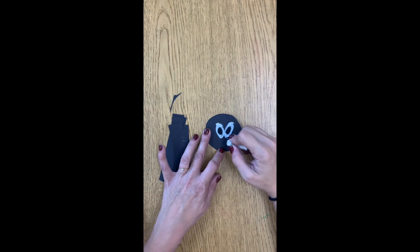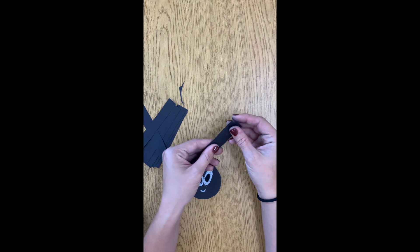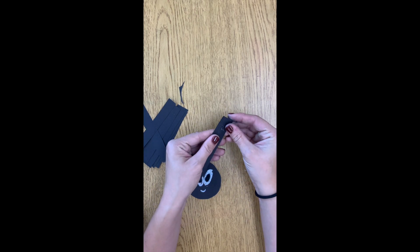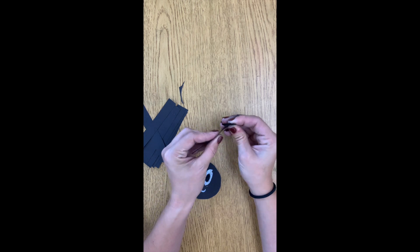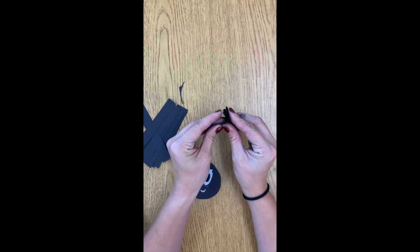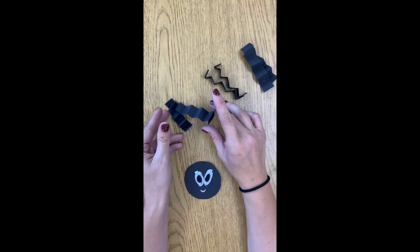You could also use a crayon for this step. To add a 3-dimensional aspect to my artwork, I am going to use an accordion fold. So I am going to take 2 at a time and go forward, then backward, forward, then backward, and then I will have some bumpy legs for my spider.